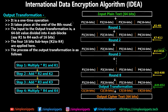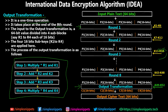We've pretty much reached the last step of the encryption process. After the 8 rounds are complete, we come to output transformation, which only happens once — at the end of the eighth round. The input to output transformation is a 64-bit value from the eighth round, divided into four 16-bit blocks. The four remaining sub-keys K49 to K52 are applied here.